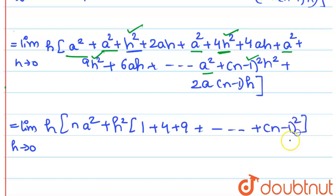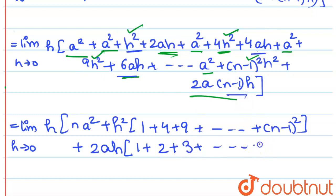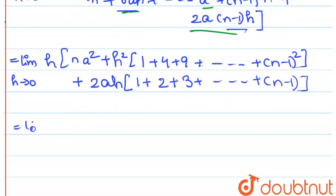Applying the standard sum formulas: the sum 1²+2²+...+(n-1)² and 1+2+...+(n-1). So the expression becomes: limit h tends to 0, h times [n·a² + h²·(n-1)n(2n-1)/6 + 2ah·(n-1)n/2]. Now, since b minus a equals n·h, we can write n = (b-a)/h.